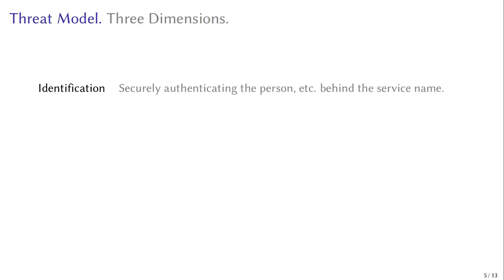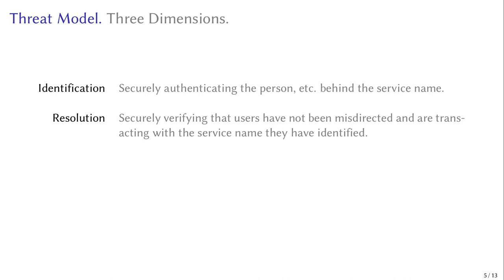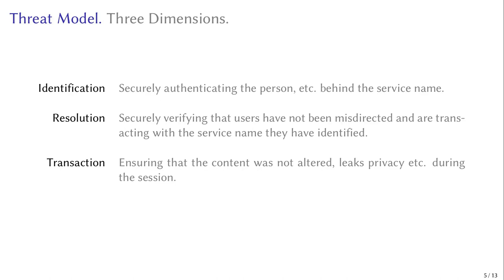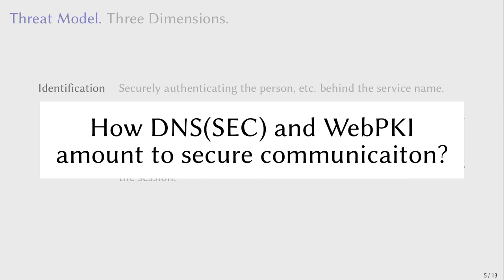This is where our threat model comes into play. We define security on three dimensions: identification — knowing with whom you're communicating; resolution — making sure that a name has been mapped or resolved properly into the correct network service; and finally, that the actual data exchange is protected from eavesdropping or manipulation. The question is, how do DNSSEC and WebPKI amount to securing online communication?